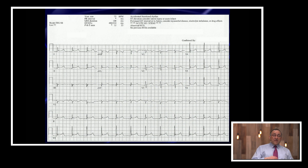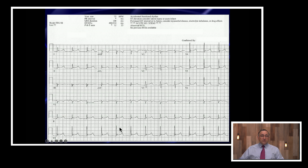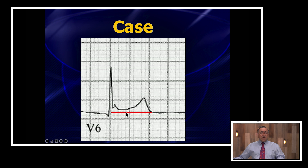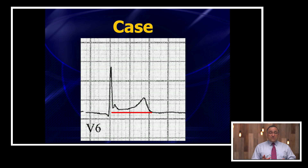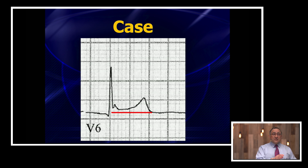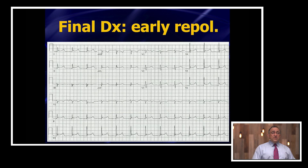Going back to the case: is it possible this is early repol? Well, there's concave upwards elevation, no reciprocal depression, and lead 3 ST elevation is not greater than in lead 2. But one other very helpful feature — take a look at lead V6. The amount of elevation in V6 compared to the height of the T wave is less than a quarter. That very strongly points towards early repol and not STEMI or pericarditis. We then got serial EKGs, which did not evolve or change. This turned out to be early repolarization. V6 really, really was helpful in this case.